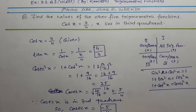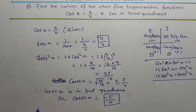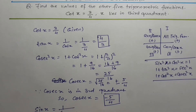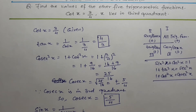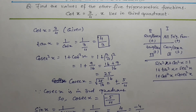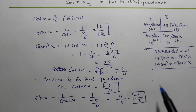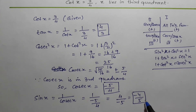Next is sin x. Since sin is the reciprocal of cosec, sin x = 1/cosec x = 1/(−5/4) = −4/5. Sine will be negative because x is in the third quadrant, which is correct.